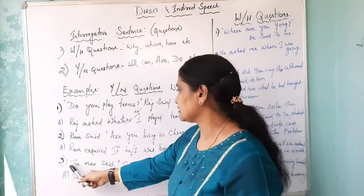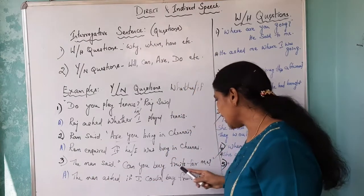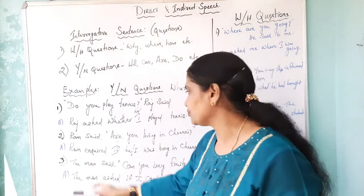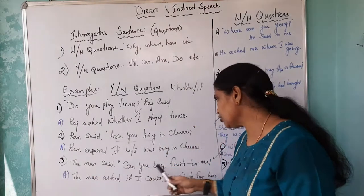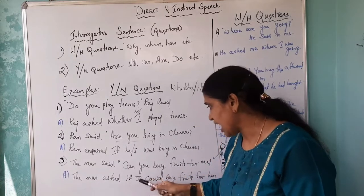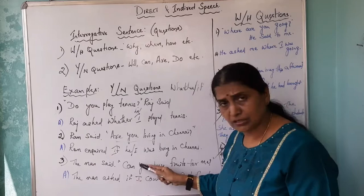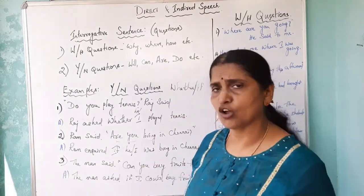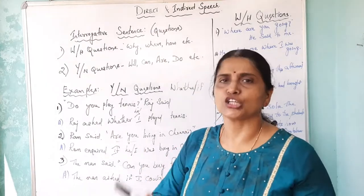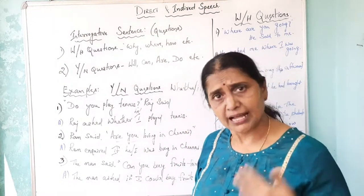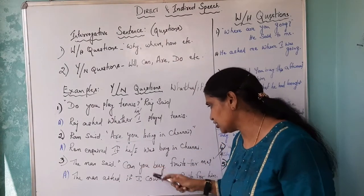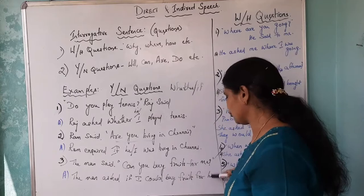The next example — the man said: 'Can you buy fruits for me?' 'Can' has to be changed to 'could.' The subject is not mentioned, so you can write he, you, or she as per your discretion. So: 'The man asked if I could buy fruits for him.'